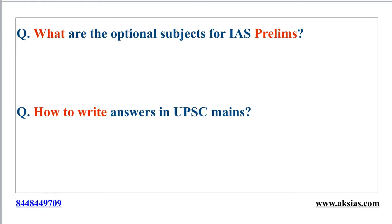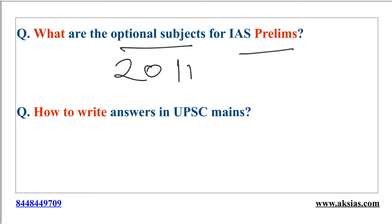The next question is: what are the optional subjects for the IAS or civil services prelims examination? Please remember that in the year 2011, UPSC made transformational changes in the civil services examination. It replaced the optional subject paper with GS Paper 2, that is the Civil Services Aptitude Test, in the IAS prelims exam. So from the year 2011 onwards, there is no optional subject in the prelims examination.